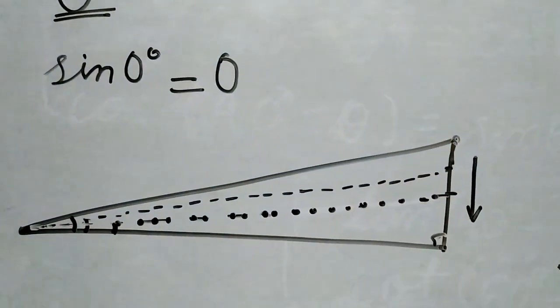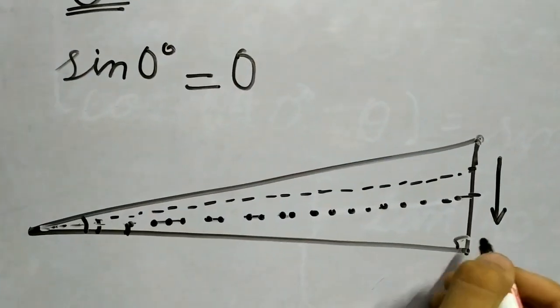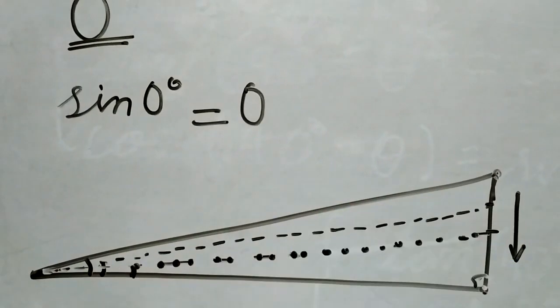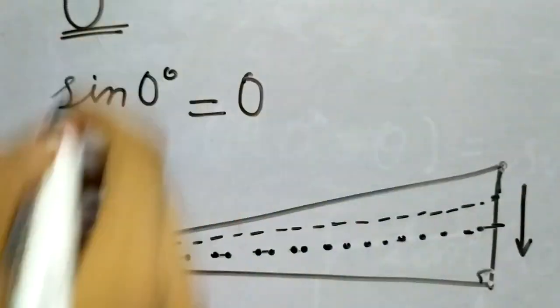So as it moved down, sin θ approached 0. And when finally it became aligned, the perpendicular became 0, so sin θ became 0.